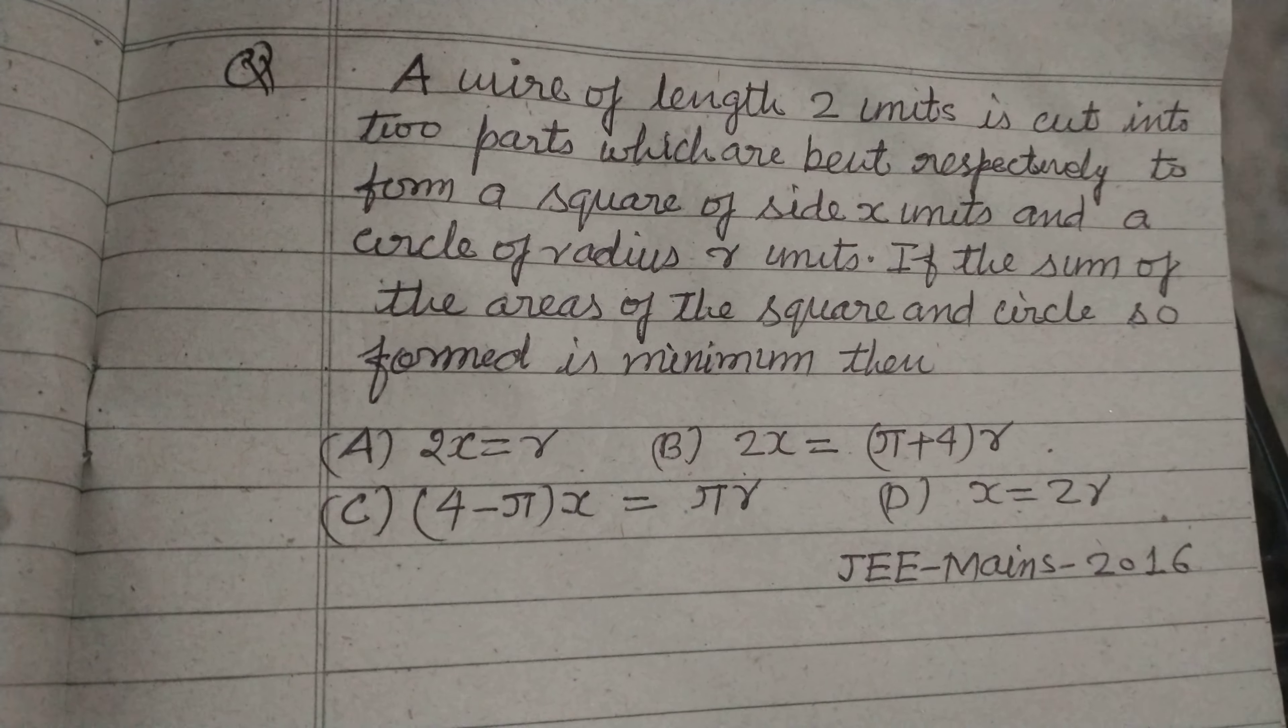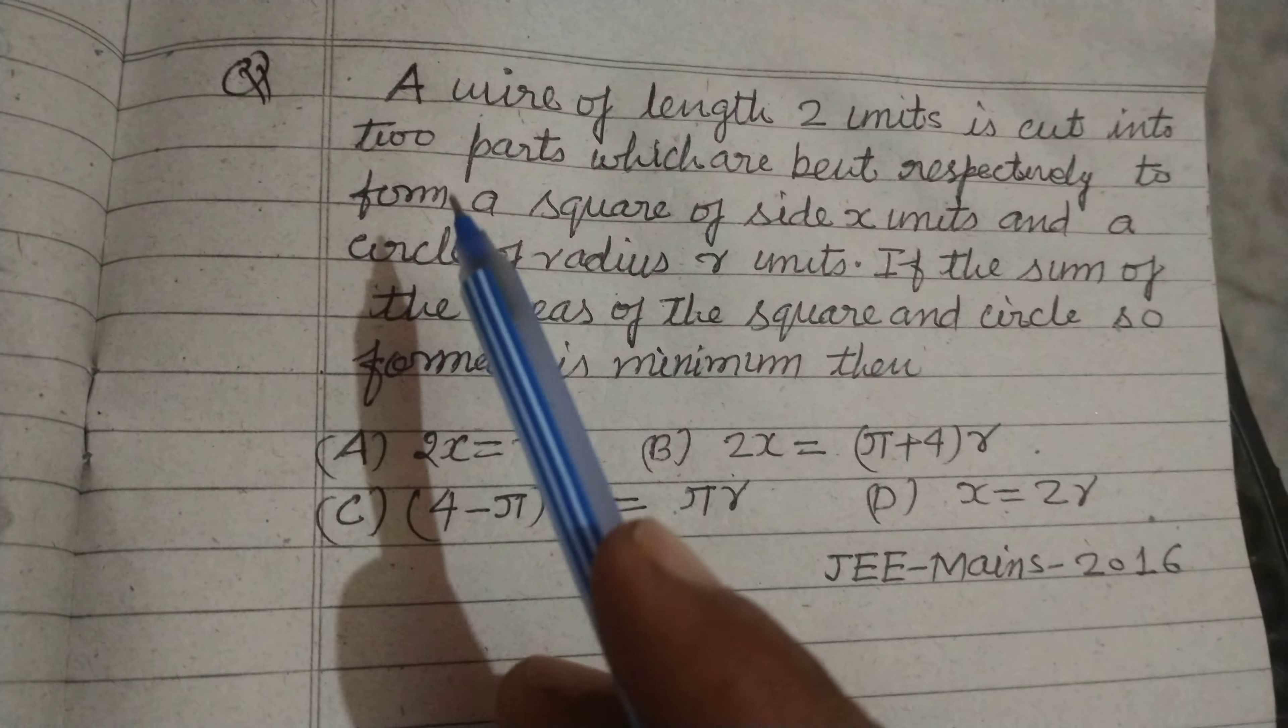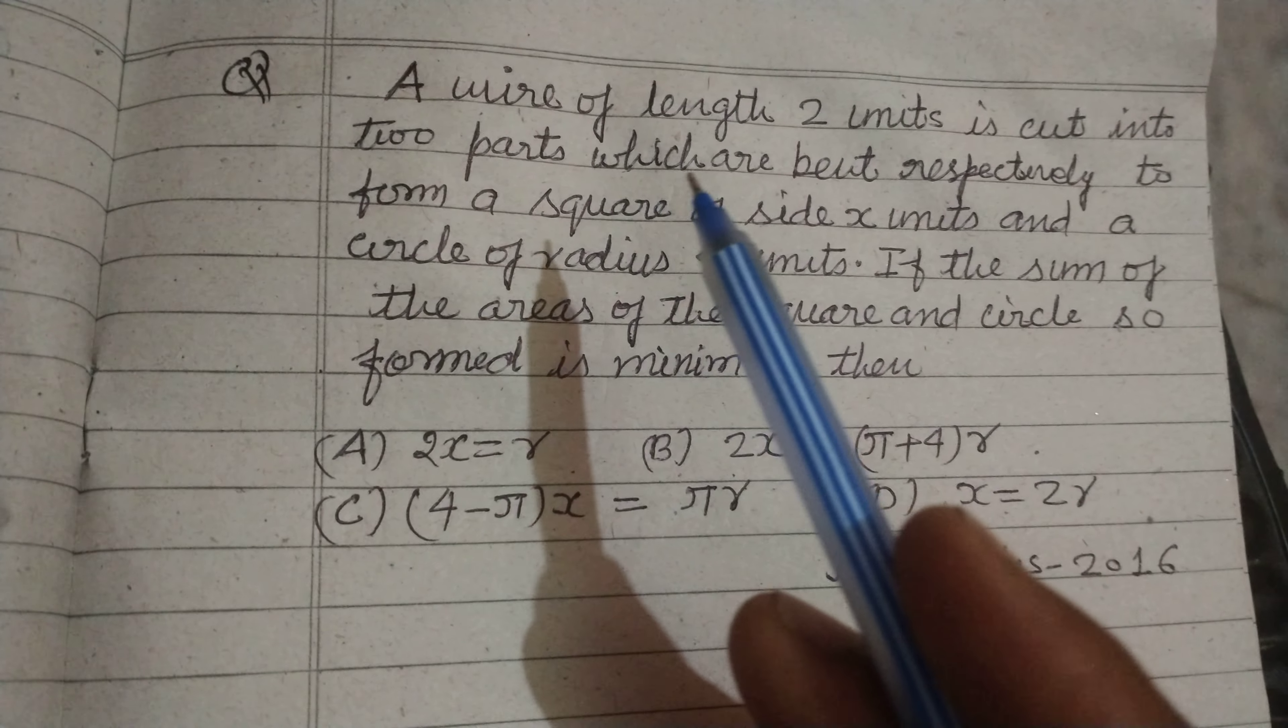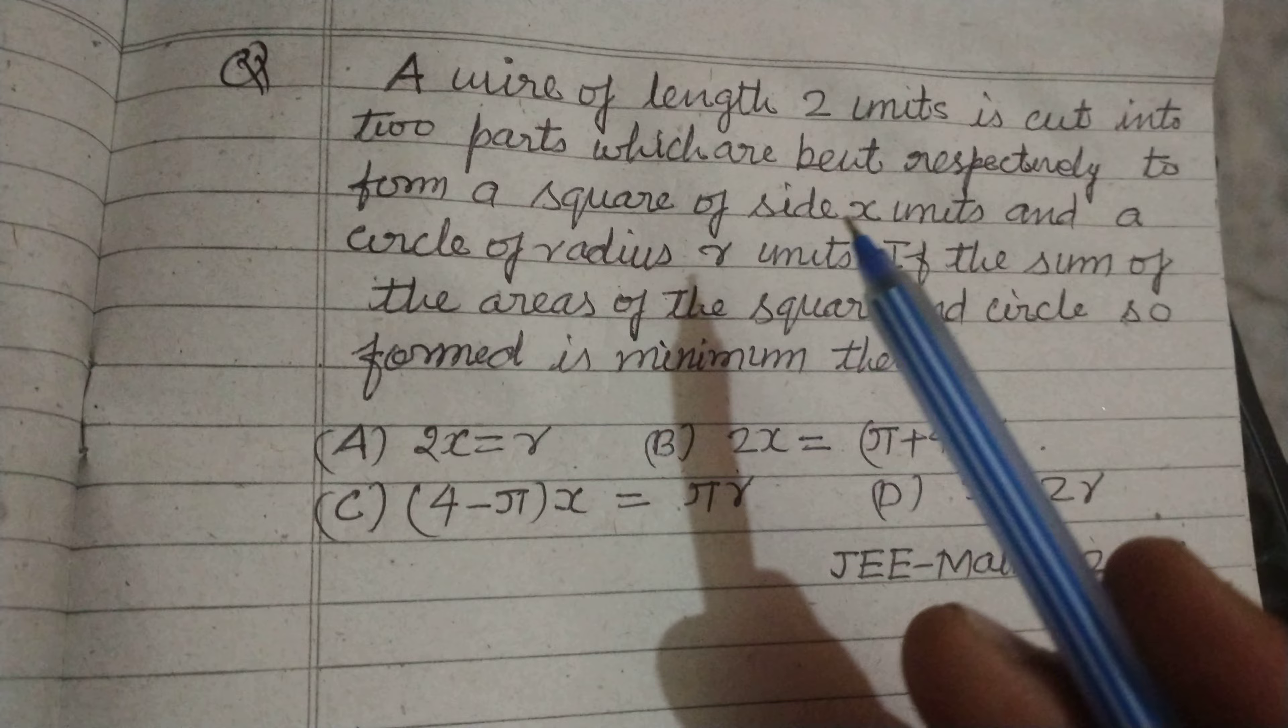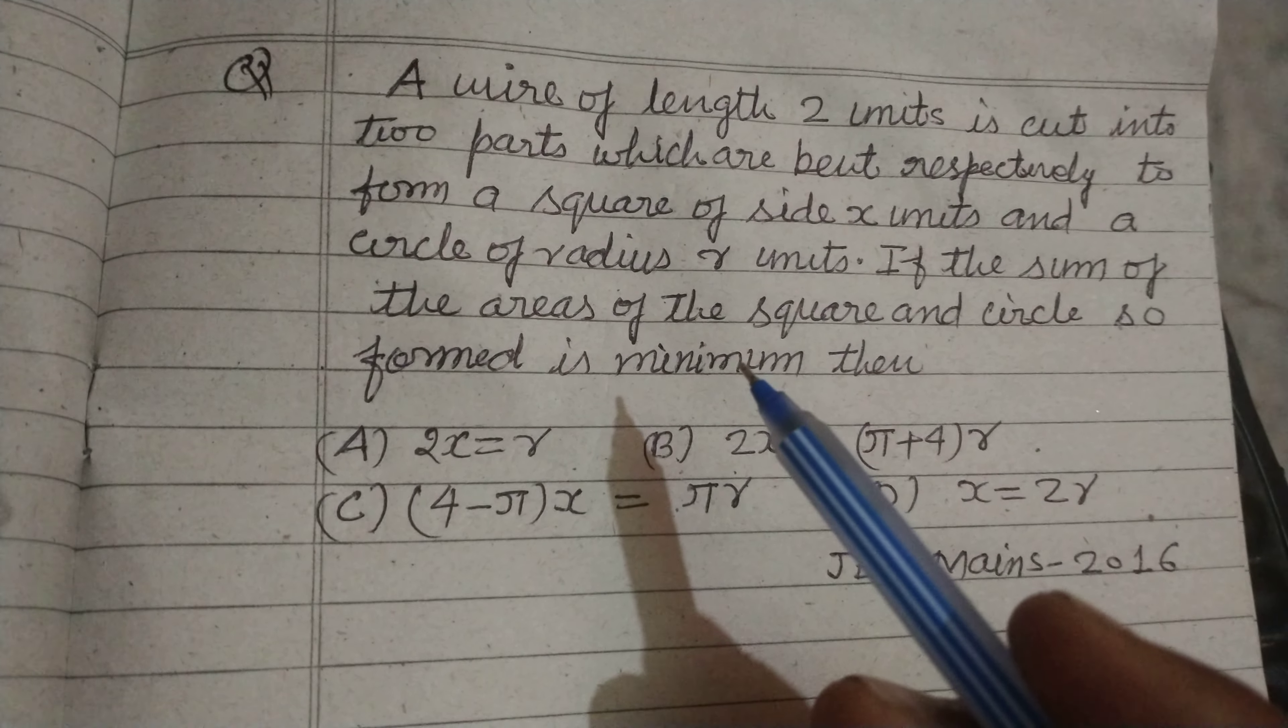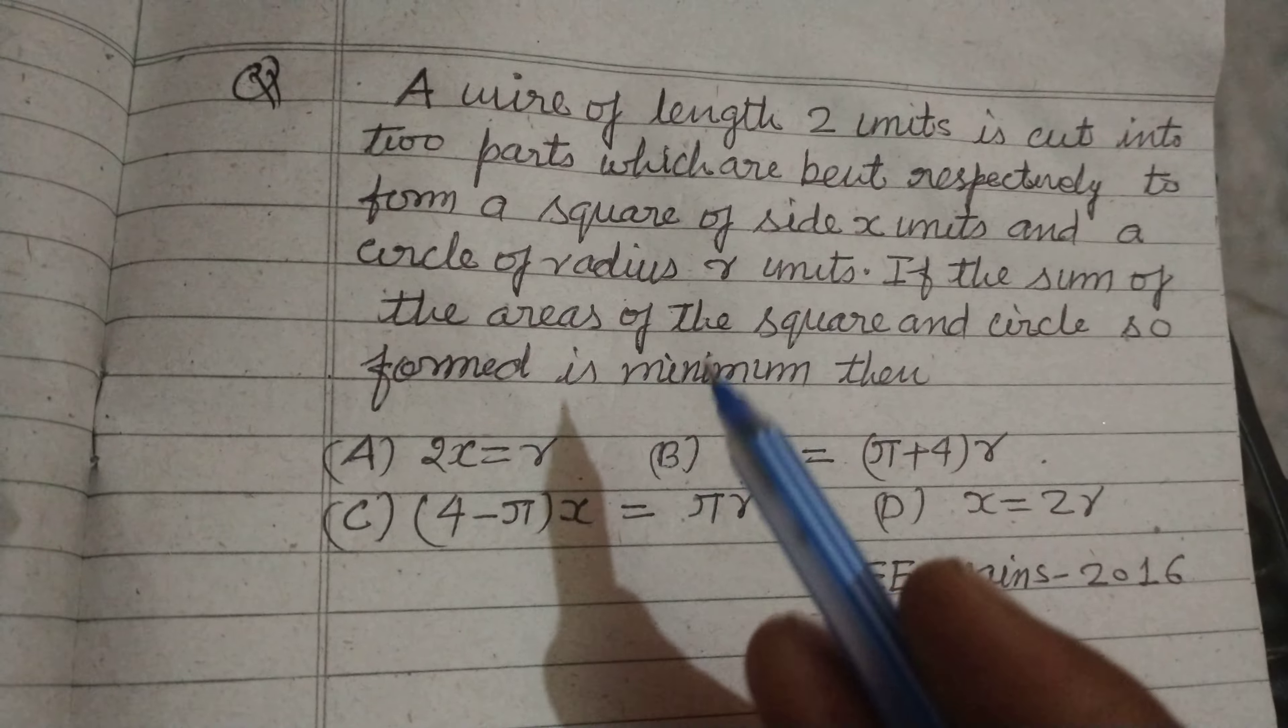Hello students, welcome to this YouTube channel. Question from JEE Mains 2016: A wire of length 2 units is cut into two parts which are bent respectively to form a square of side x units and a circle of radius r units. If the sum of the areas of the square and circle so formed is minimum, then what is the relation between x and r?